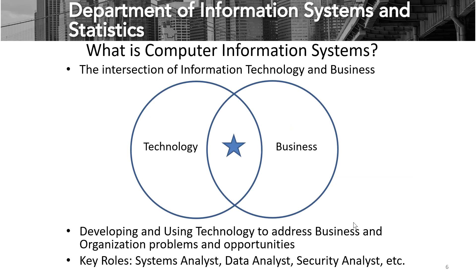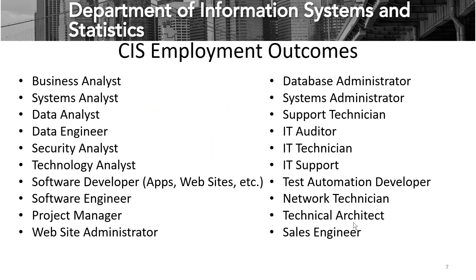One of the biggest questions that comes up is: exactly what is computer information systems? We like to think of it as the intersection of information technology and business — developing and using technology to address business and organizational problems and opportunities. Key roles include the systems analyst, data analyst, and security analyst. However, our students go on to careers in many different job titles, including analysts, various types of engineering roles like data or software engineer, management and administration such as database administrator or systems administrator, technical roles like support technician or network technician, and even business-oriented roles like an IT auditor.